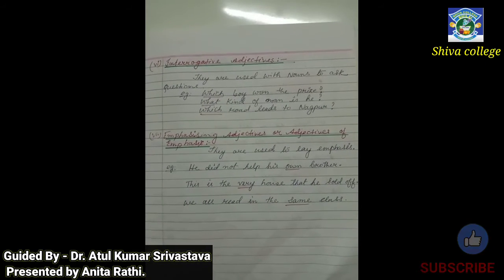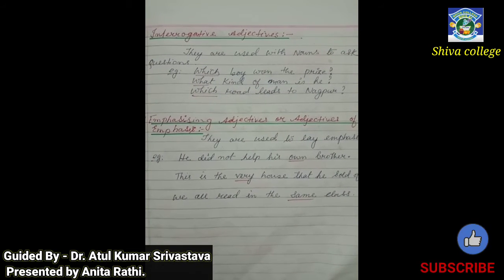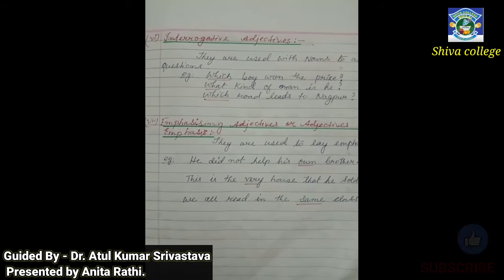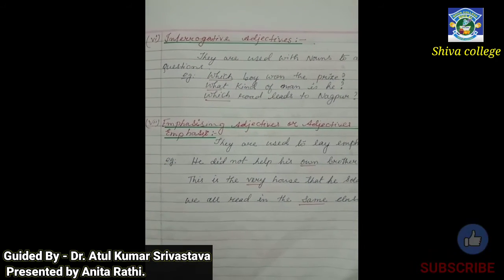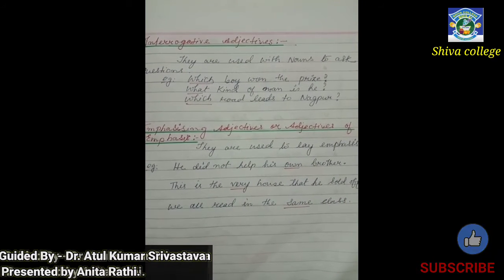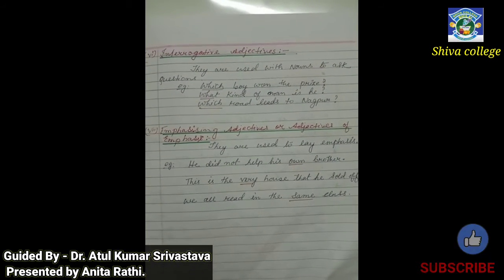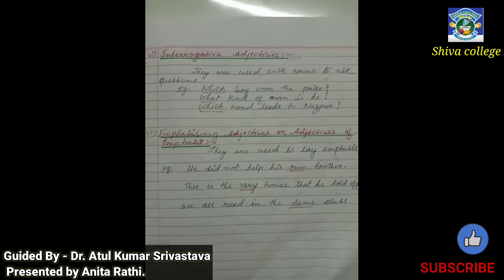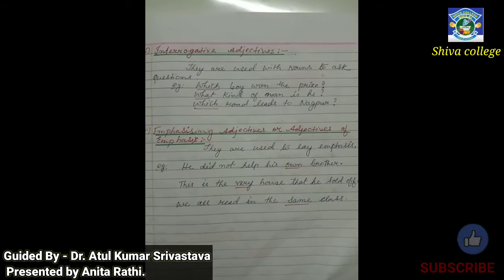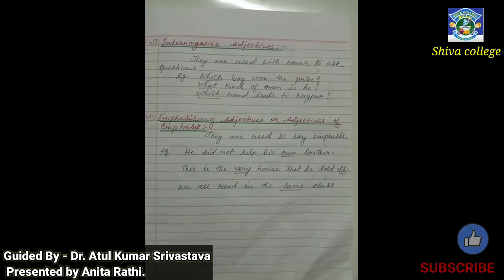Interrogative adjectives are used with nouns to ask questions. The words like which, what — these are wh-question-asking words. For example: 'Which boy won the prize?', 'What kind of man is he?', 'Which road leads to Nagpur?' These wh-words used with nouns to ask questions are called interrogative adjectives.